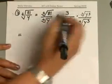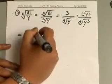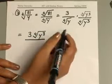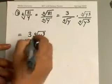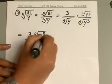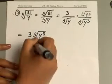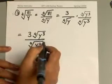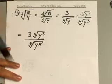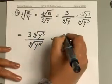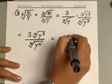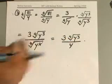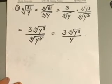On the numerator you're left with 3 times fourth root of y to the third. In the denominator, since the indices are the same, multiply the radicands: y times y to the third gives y to the fourth. The fourth power cancels out the fourth root, so your final answer is 3 times fourth root of y to the third over y.